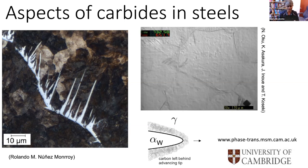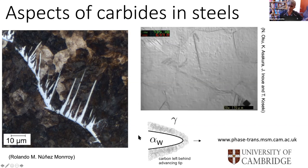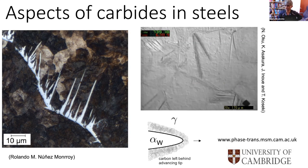We are all familiar with displacive transformations which are controlled by the rate at which carbon partitions. For example, we take it for granted that Widmanstätten ferrite forms by a displacive transformation mechanism, but controlled at a rate by which carbon advances in the austenite ahead of the interface. Just to show that it's a displacive transformation, if you polish a surface organically flat you will see invariant plane strain deformations due to the formation of Widmanstätten ferrite.